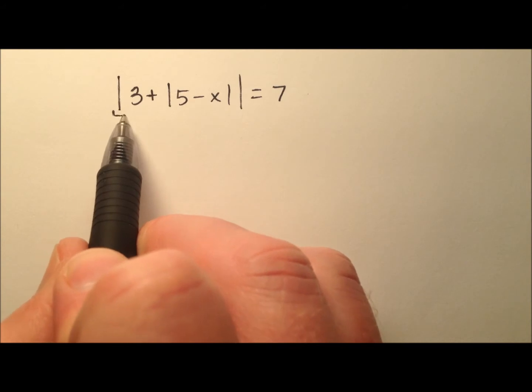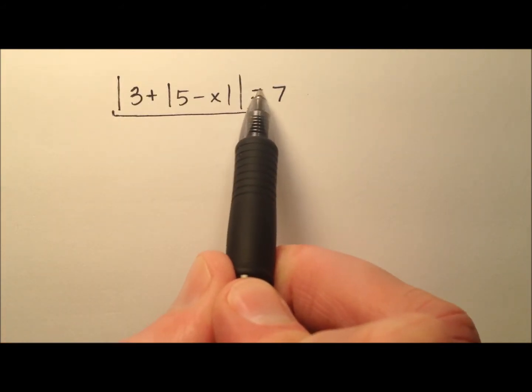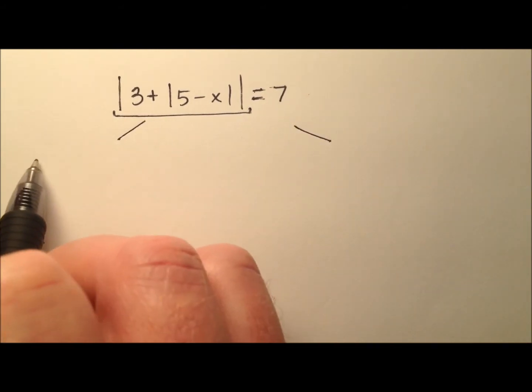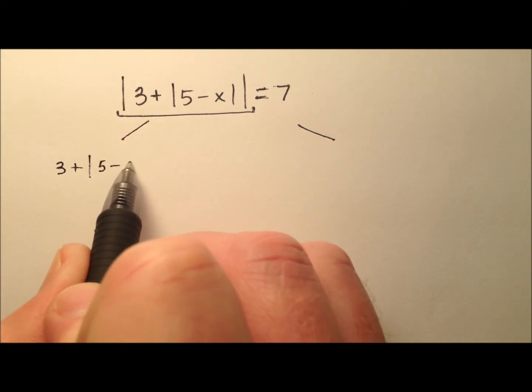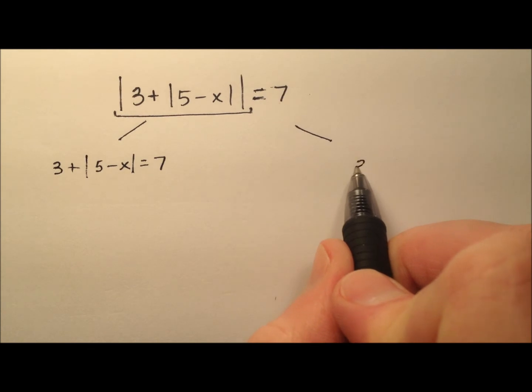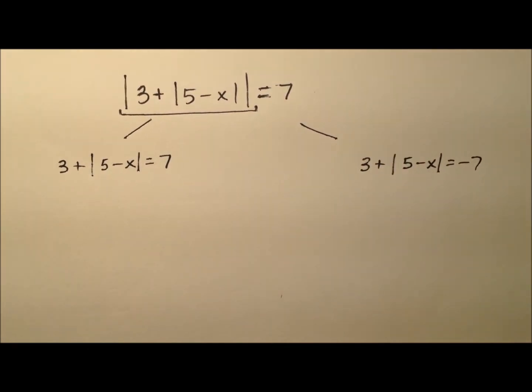Since this larger outside absolute value is isolated on this left side and it equals 7, I'm going to go ahead and divide this up as 3 plus the absolute value of 5 minus x equals positive 7 and 3 plus the absolute value of 5 minus x equals negative 7.